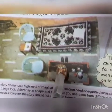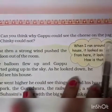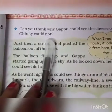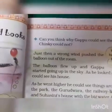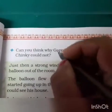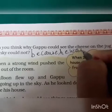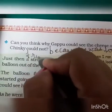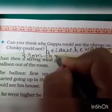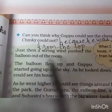Moving on to page number 53. Can you think why Gopu can see the cheese on the jug but Chinky could not? Because he was seeing from the top, that is why he could see it. Write the answer: because he was looking from the top, that is why he could see.